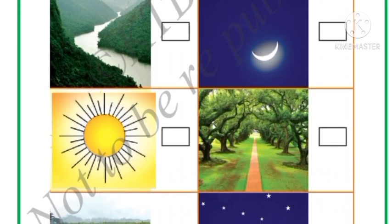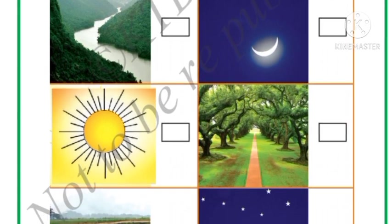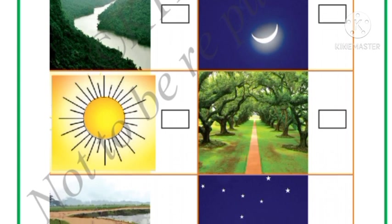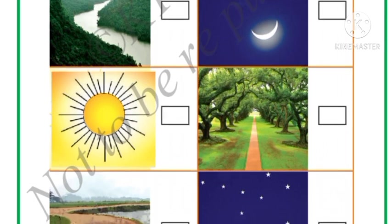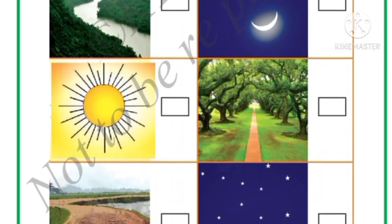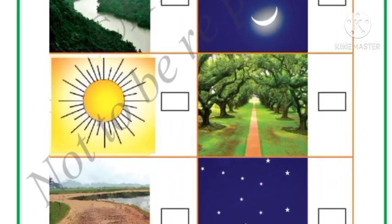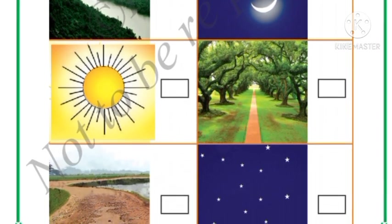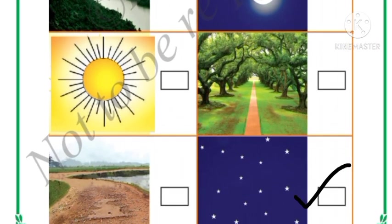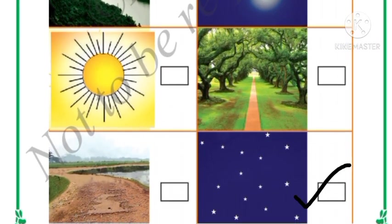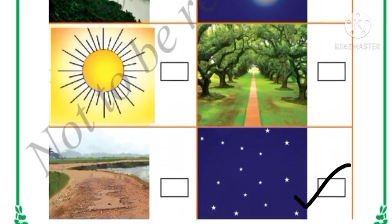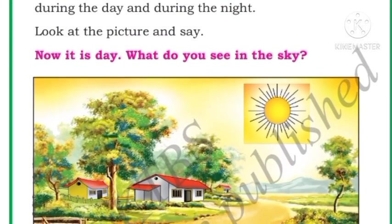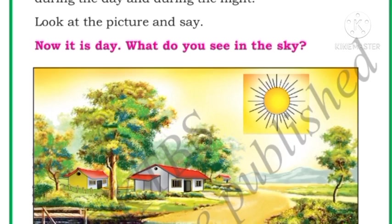Then trees — do you see trees in the sky? No, we will not see trees in the sky. Then road — do you see the road in the sky? No, we will not see the road. Then stars — yes, of course we do see the stars in the sky at night, so we will put a right mark.